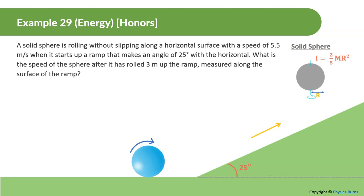Last example: a solid sphere rolling without slipping along a horizontal surface at 5.5 meters per second starts up a ramp at 25 degrees to the horizontal. What is the speed of the sphere after it has rolled 3 meters up the ramp along the surface? We apply conservation of energy, tracking both translational and rotational kinetic energy.